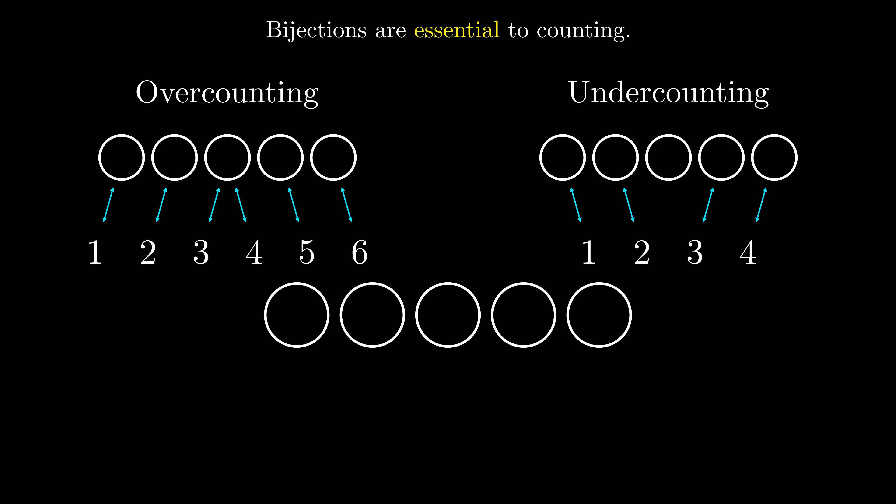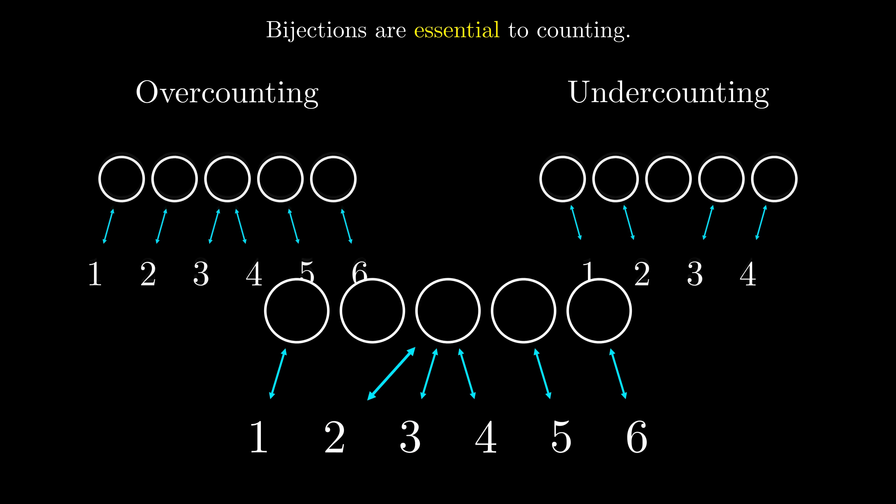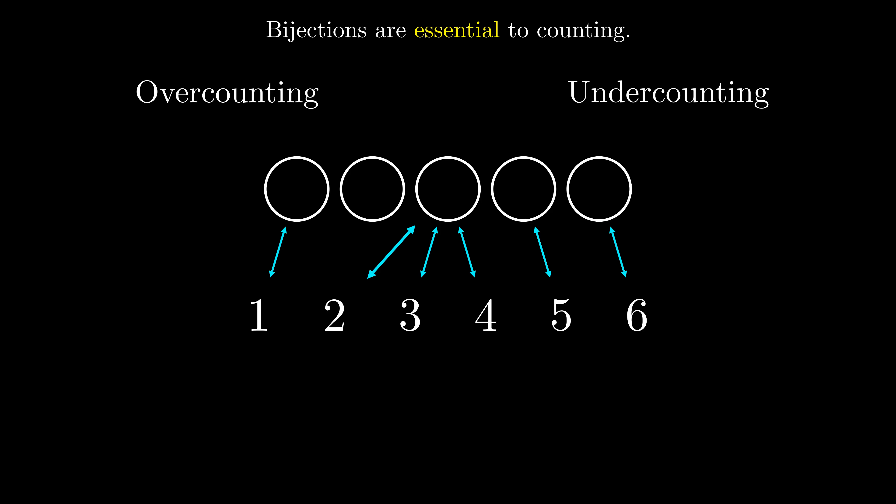Here's a question for you. Let's say we undercounted and then we fixed our undercounting mistake. Is our answer now correct? If you said yes, you have fallen into one of the most common counting traps. Take a look at this assignment of numbers with circles. Clearly, we have undercounted because we missed this circle. However, fixing it does not give us the right answer as we have overcounted too. This tells us that it is possible to overcount and undercount at the same time.